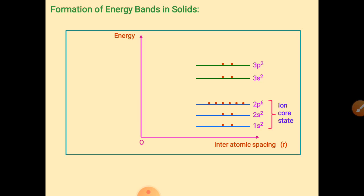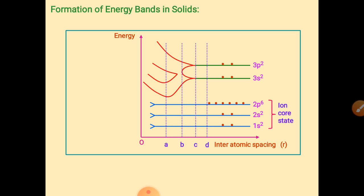1s, 2s, and 2p are core states, meaning no electrons from these energy levels move freely — they are bound with greater energy. To remove an electron from these inner energy levels, we must supply more energy. These inner energy levels form a distinct pattern shown in the figure.